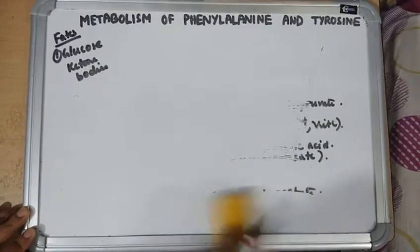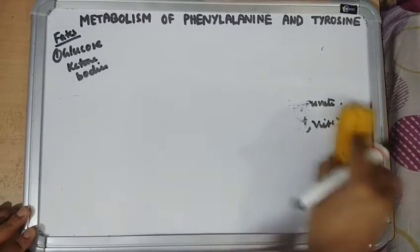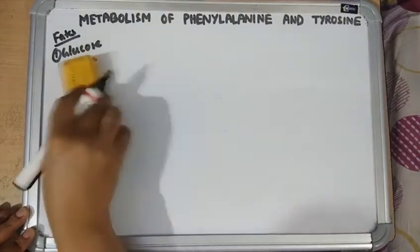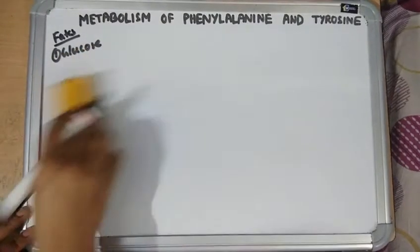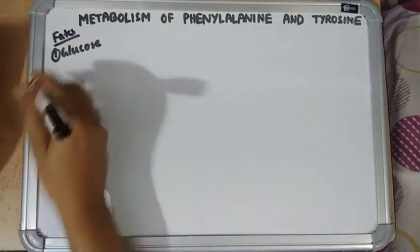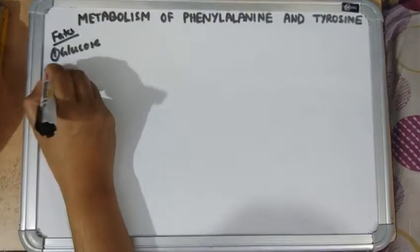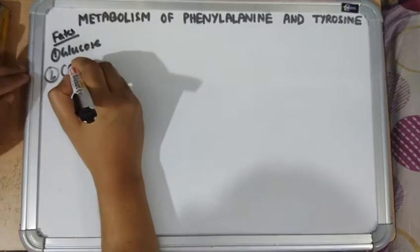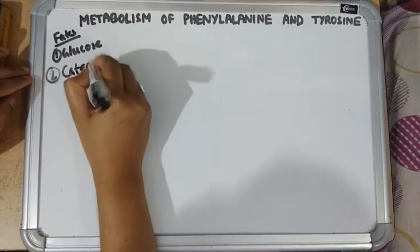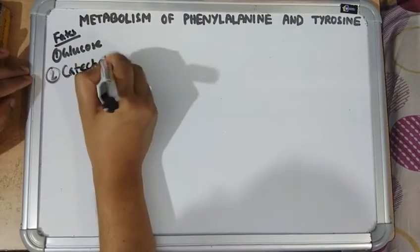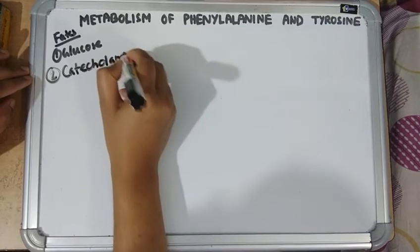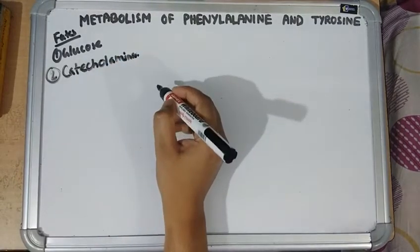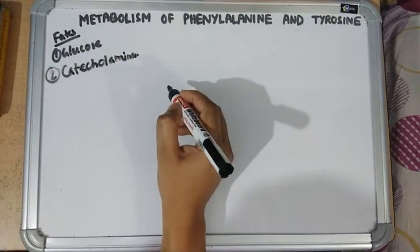Next is the synthesis of catecholamines. Catecholamines are named because they contain a catechol nucleus. There are three catecholamines: epinephrine, norepinephrine, and dopamine. They are synthesized in the adrenal medulla and sympathetic ganglia.